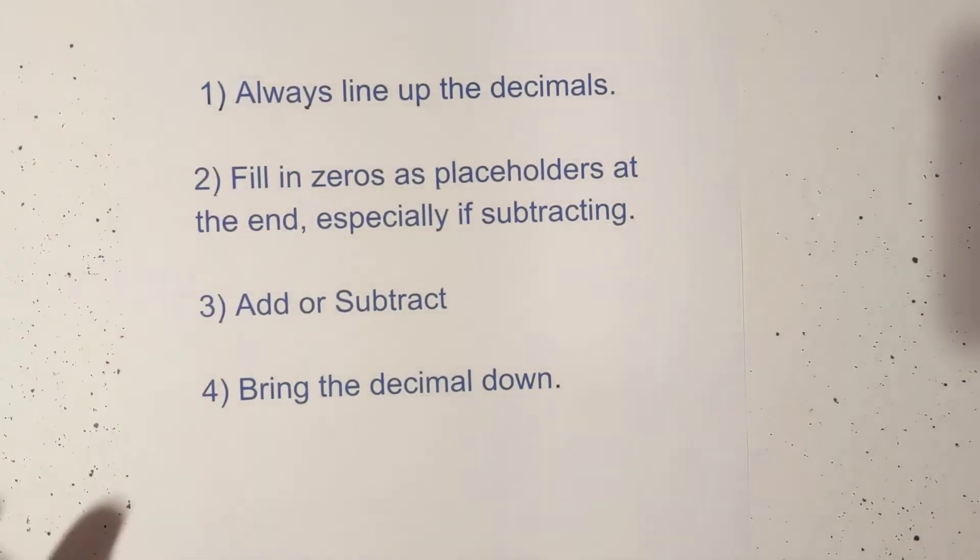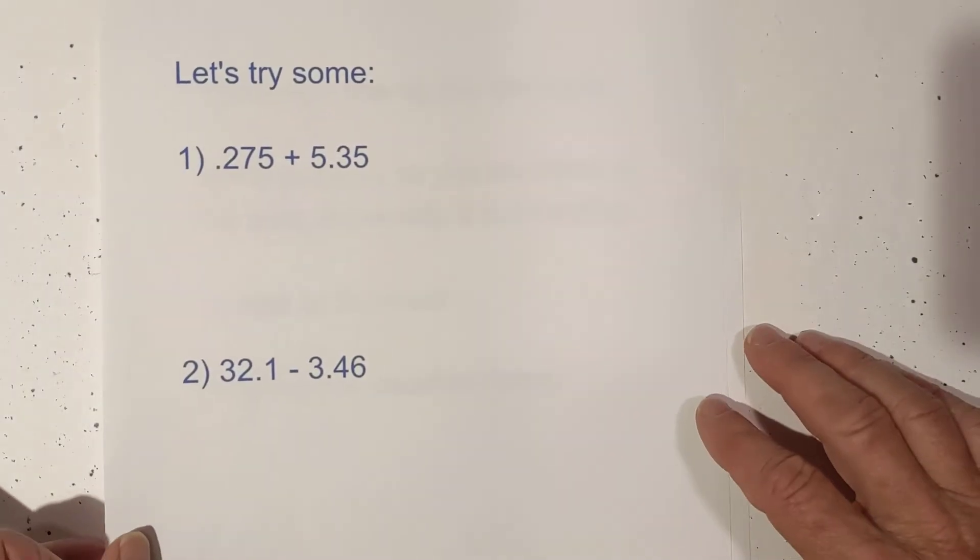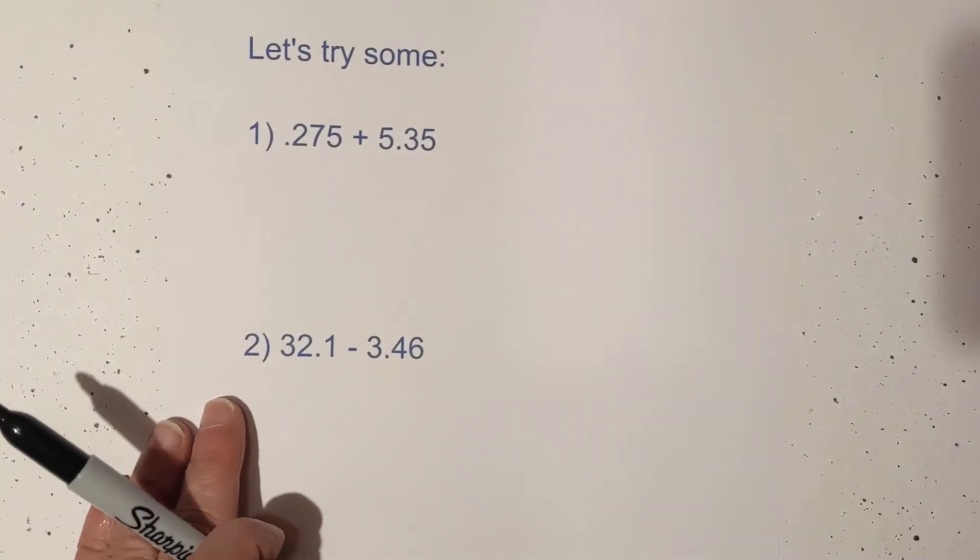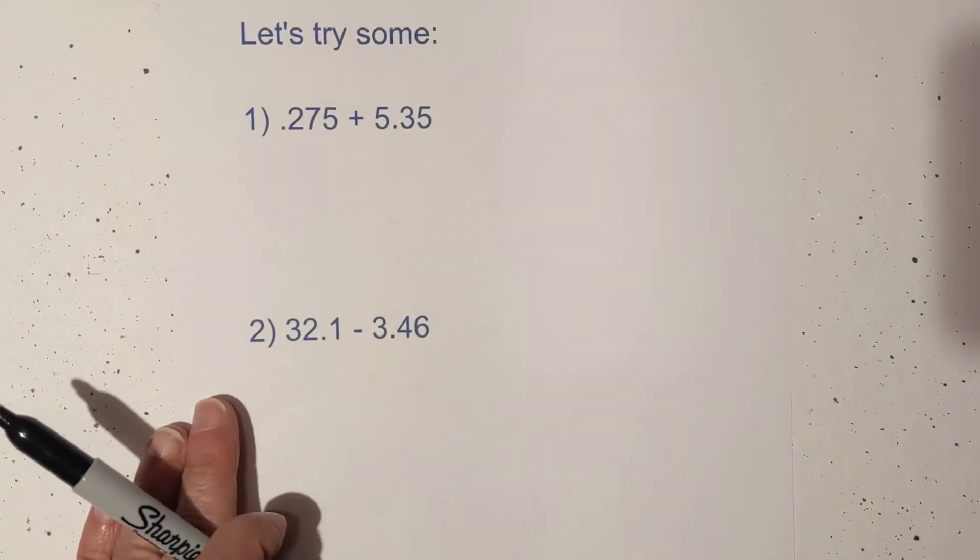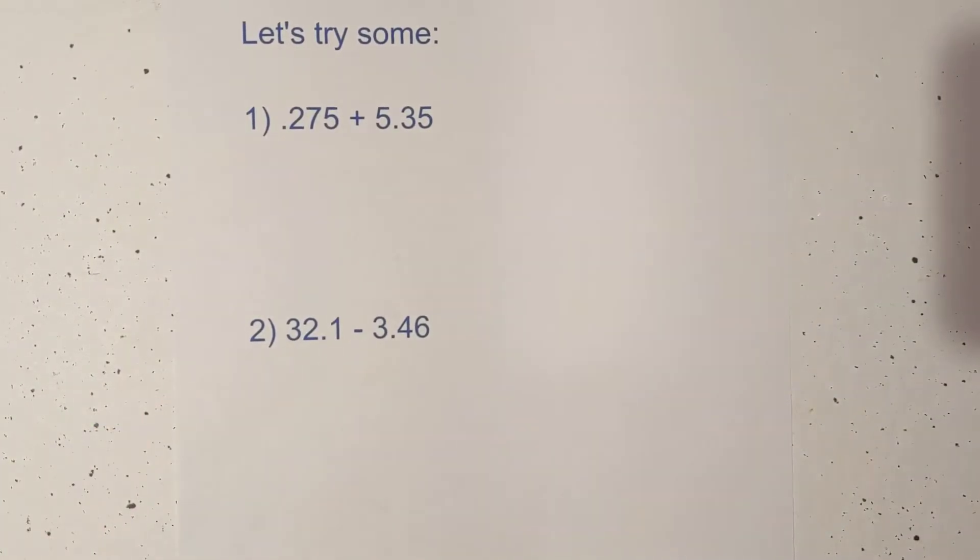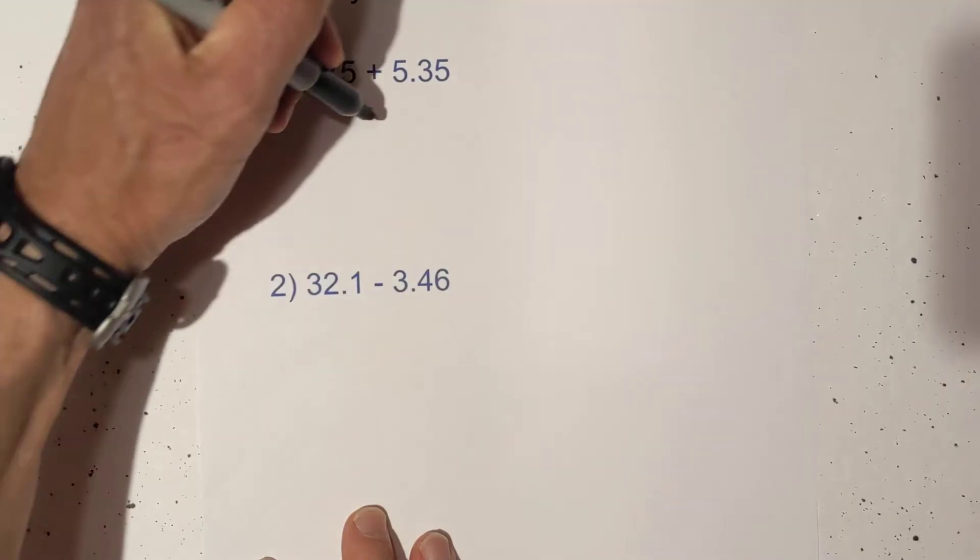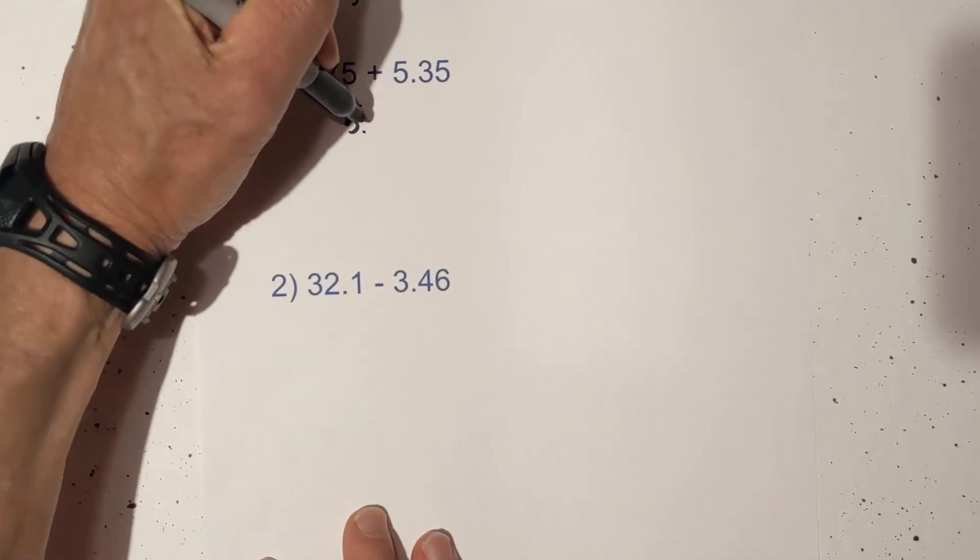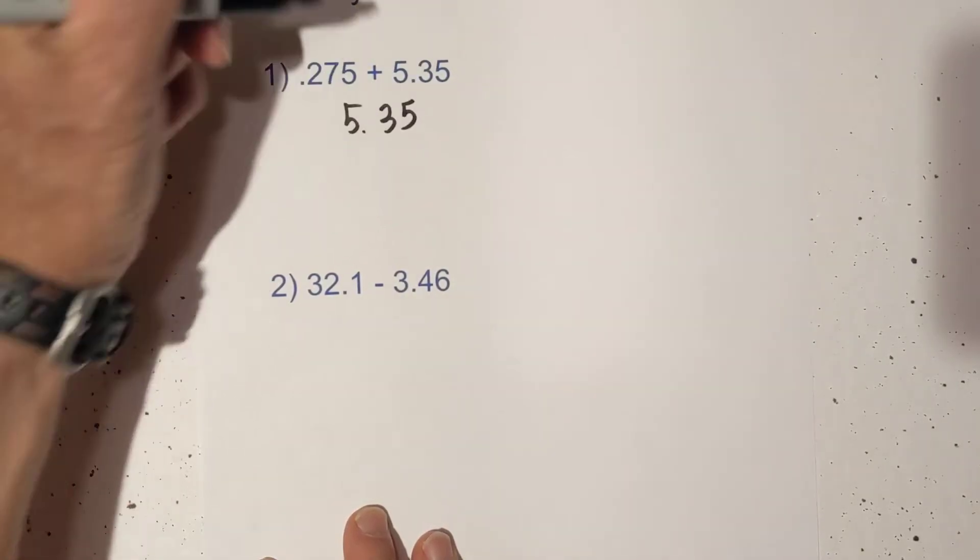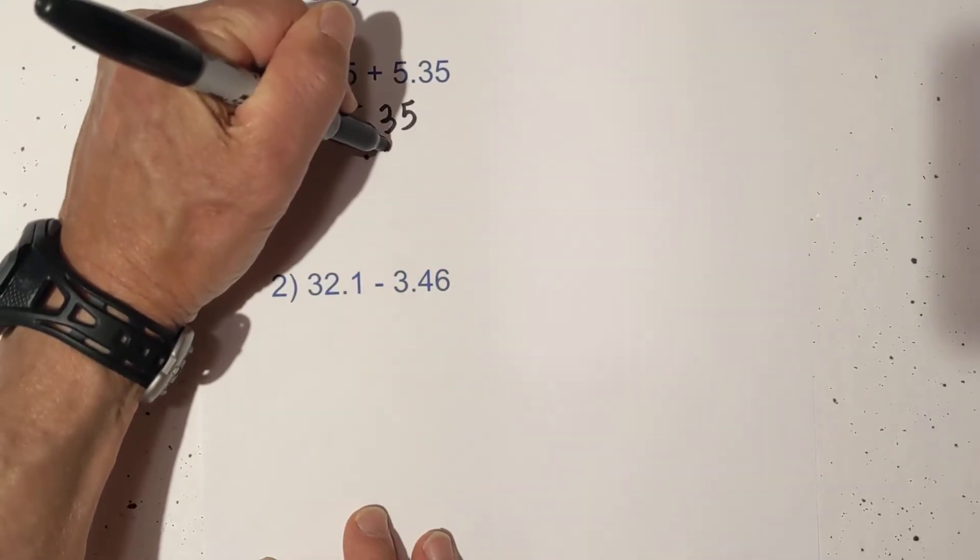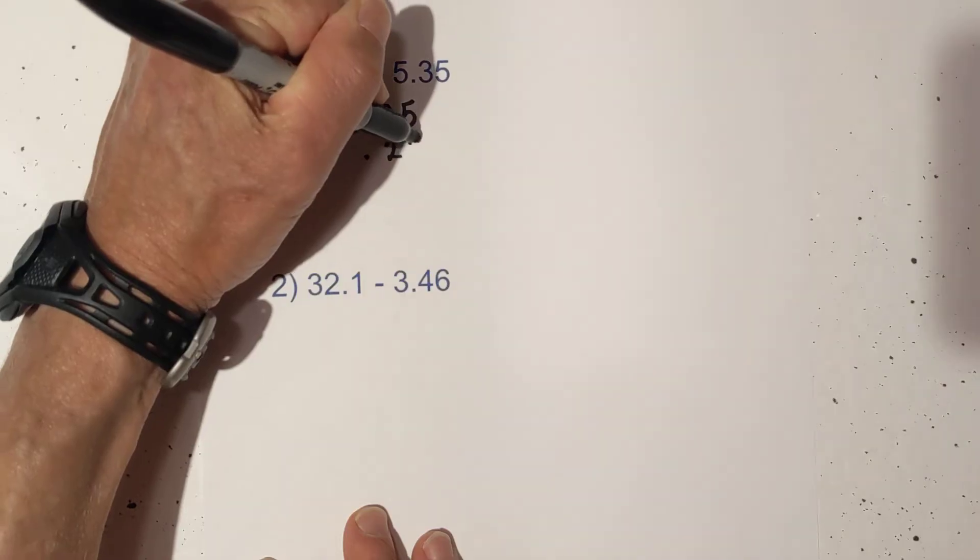Let's get started. Here's problem number one: 0.275 plus 5.35. Let's write this out. I'm going to write the 5.35 up top because that will make it easier. The decimal is right here. We're going to line up the decimals, 275.